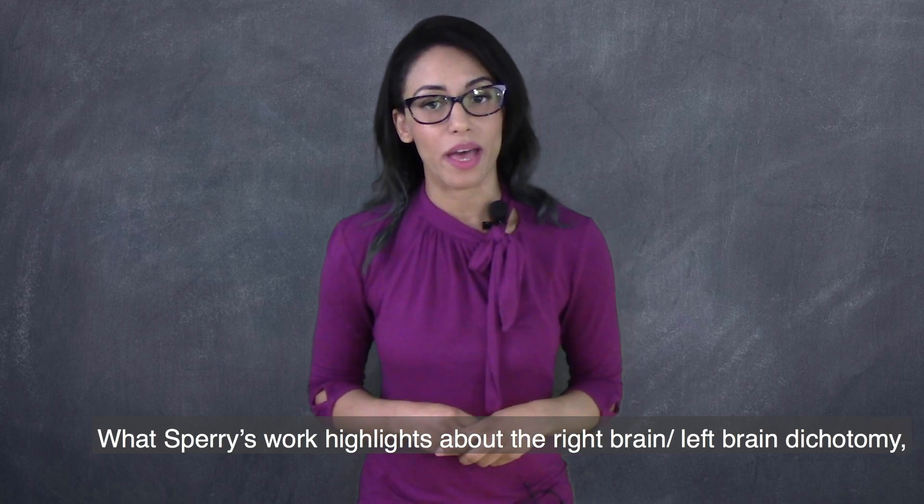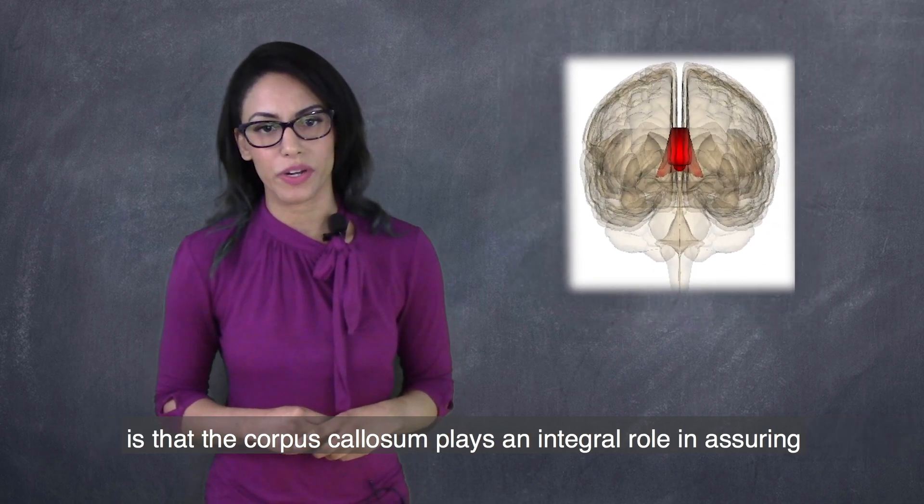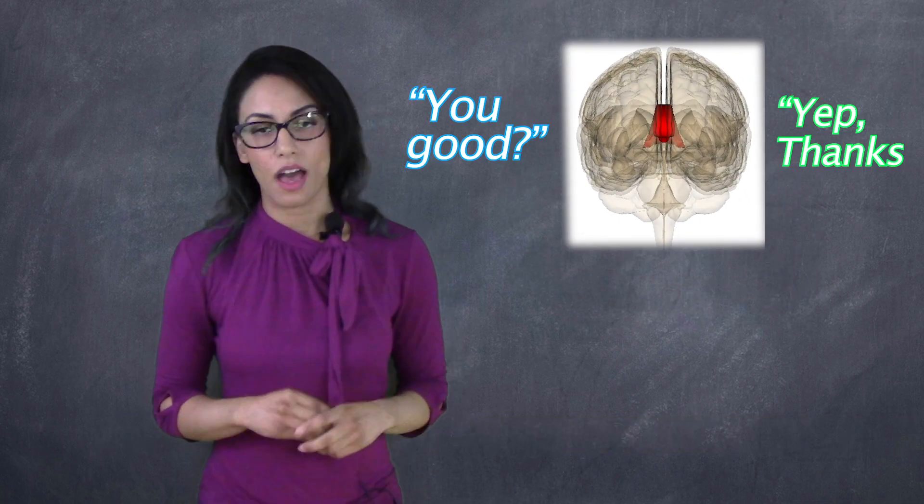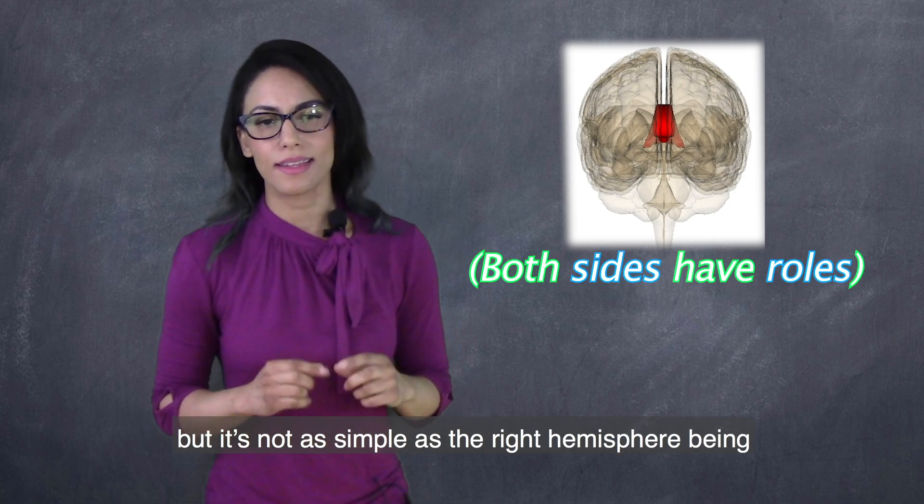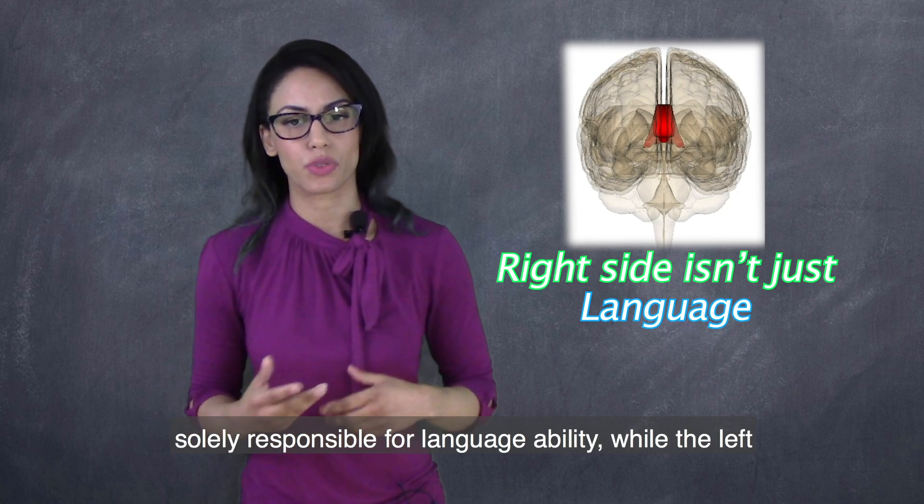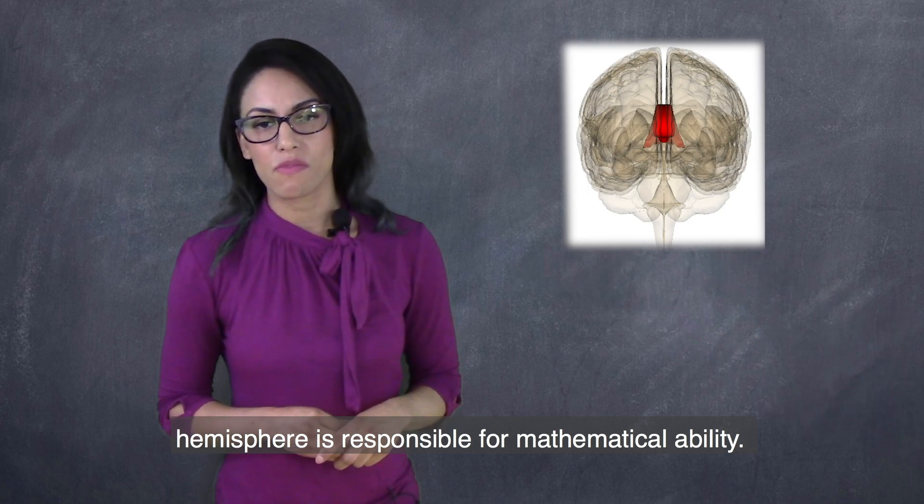What Sperry's work highlights about the right-brain-left-brain dichotomy is that the corpus callosum plays an integral role in assuring that the two hemispheres work together. Other aspects of his work show that there is hemispheric specialization, but it's not as simple as the right hemisphere being solely responsible for language ability, while the left hemisphere is responsible for mathematical ability.